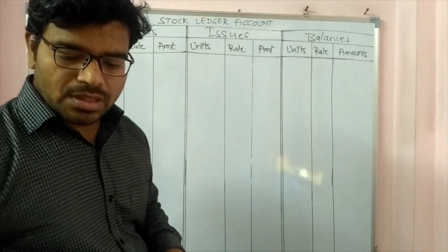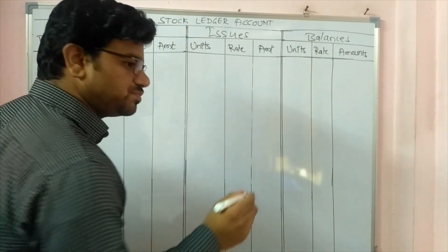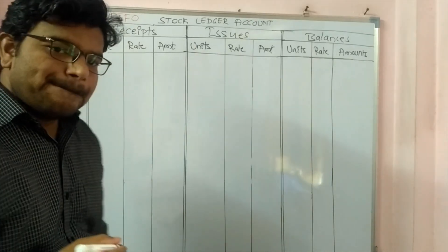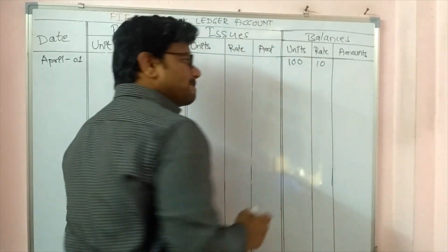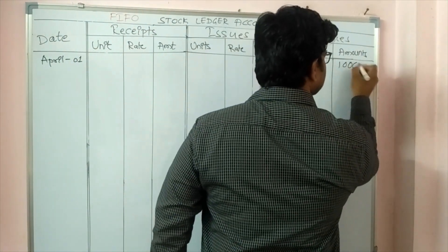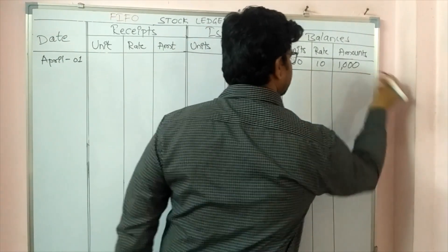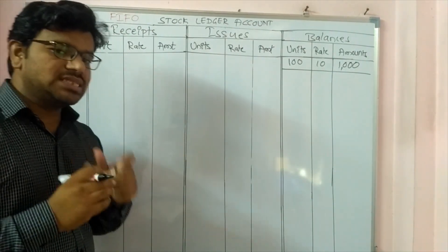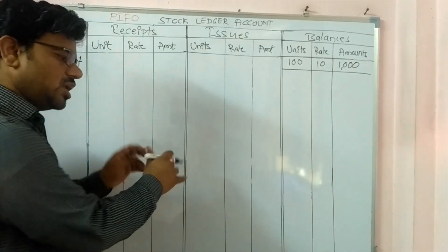Let us understand this stock ledger account using FIFO by taking an example. On April 1st, in my godown, I had 100 units at rupees 10, so the total value will be 1000. This is my opening stock as on April 1st. I did not purchase any units on that date, so I will wait until something happens — some transaction occurs that affects this stock ledger account.